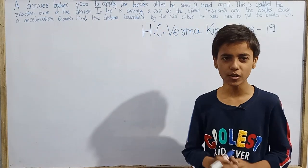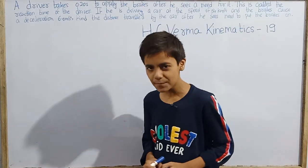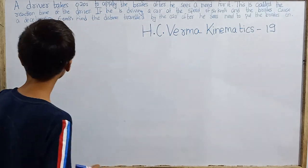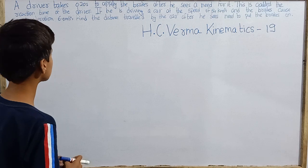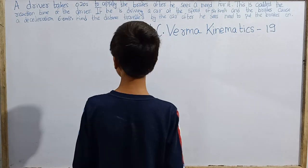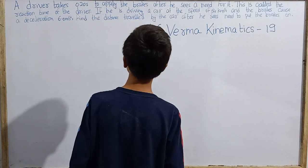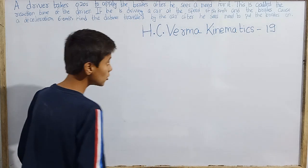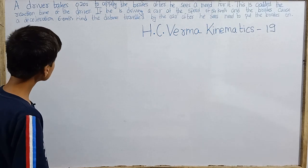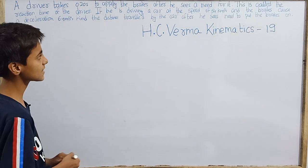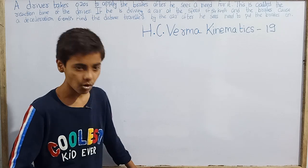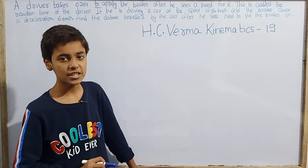Today we will be solving HC Verma's Concepts of Physics textbook, kinematics question number 19. A driver takes 0.20 seconds to apply the brakes after he sees a need for it. This is called the reaction time of the driver. He is driving at 54 km/h and the brakes cause a deceleration of 6.0 m/s². We need to find the distance traveled by the car after he sees the need to put the brakes on.